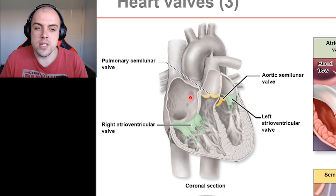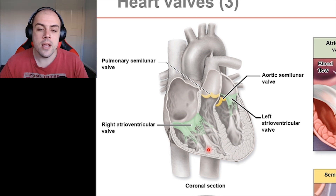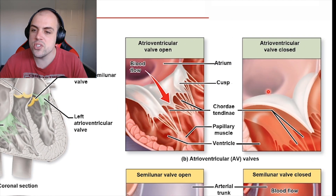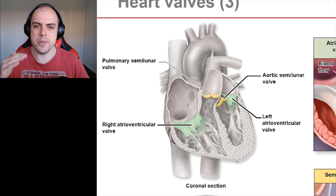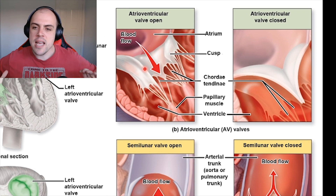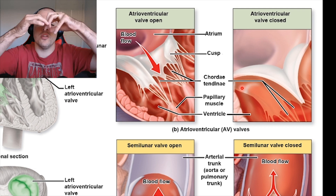When the atria constrict to push blood down into the right ventricle, the tricuspid valve is pushed open. When the ventricle then constricts, the valve snaps closed because these valves are made up of cusps. A cusp is essentially a U-shape, and as blood moves upward it pushes against these cusps, causing them to snap closed.